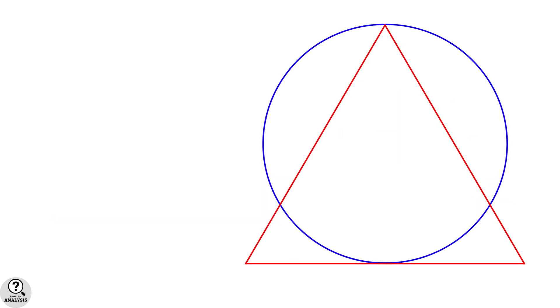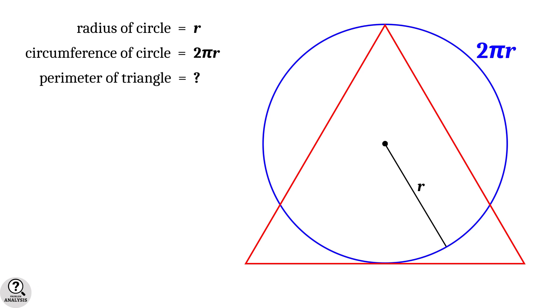Now observe the diagram. Suppose the radius of the circle is r units. Then as we know the circumference of the circle is 2πr. But we are not supposed to find the value of perimeters. We just want to find which one has the larger perimeter. So if we can calculate the perimeter of the triangle in terms of r, we can make a comparison with 2πr and then decide which one is larger. So our aim is to find the perimeter of the triangle in terms of r.